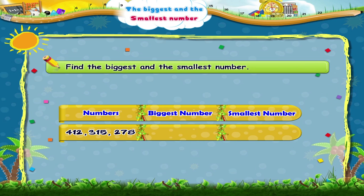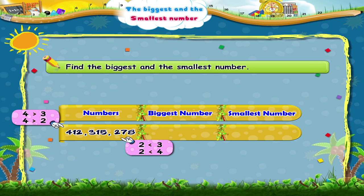Now look at these numbers. They are all three-digit numbers. Do you remember how we find out the biggest and the smallest numbers? Let us look at the digit in the hundreds place. In 412, the digit in the hundreds place is 4. In 315, it is 3. In 278, it is 2. The digit 4 is greater than 3 and 2, and the digit 2 is smaller than 3 and 4. Hence, the biggest number is 412 and the smallest number is 278.